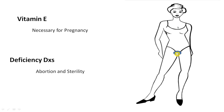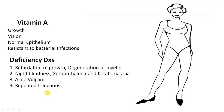Moving a little further down: Vitamin E is necessary for pregnancy. You can memorize this from the reproductive region. If Vitamin E is deficient, it will cause abortion and sterility.